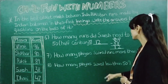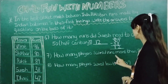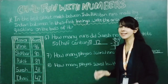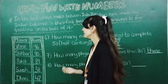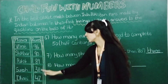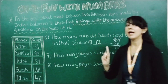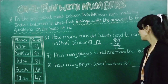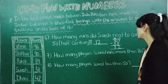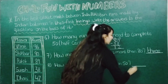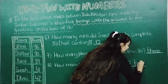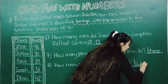Now moving to the next question: how many players scored less than 50? These two players have scored less than 50. So in this blank we will write 2.